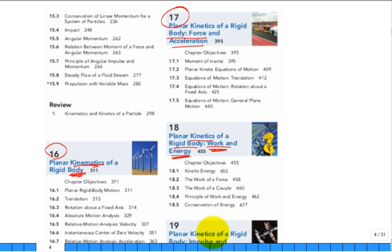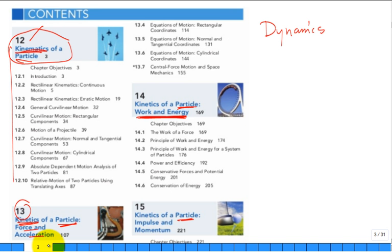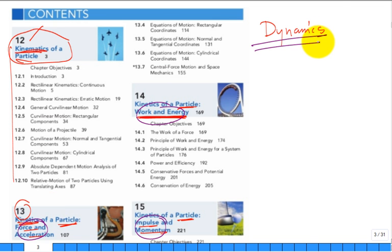Impulse and momentum appears for a particle and parallels the rigid body version. Fluid mechanics is statics plus dynamics — primarily fluid dynamics — and it's a tough class. Don't be ashamed to take that dynamics textbook off the shelf and review concepts.